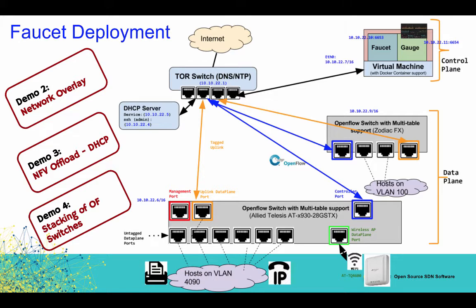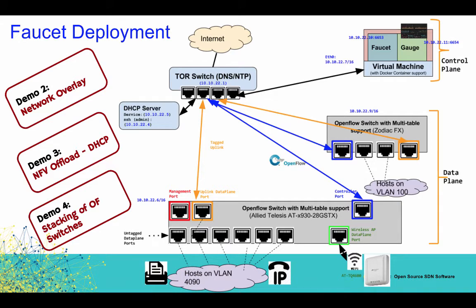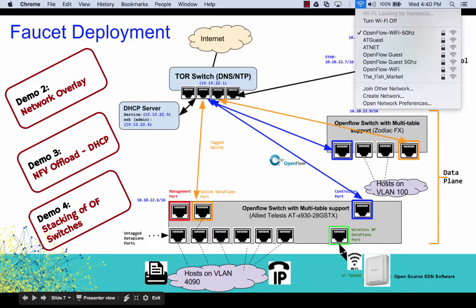This is a deployment that we have shown. We have a top of the rack switch out here, and we have controllers working to make sure that they can actually control the OpenFlow switches. One is a Zodiac switch talking to the OpenFlow switch. The other one is an Allied Telesis switch, which also has a Wi-Fi access point so that you can connect to the network via OpenFlow.